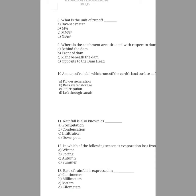Question number eleven: rainfall is also known as what? The answer is precipitation. Rainfall is also known as precipitation, which is a natural process of converting atmospheric vapour into water. Atmospheric vapours are essentially clouds, which are constituents of air and water. When the temperature goes below dew point, precipitation takes place.